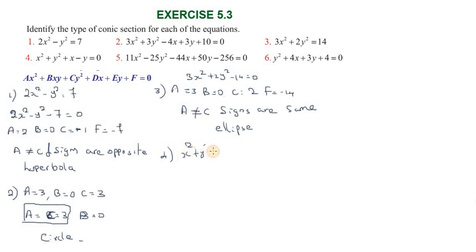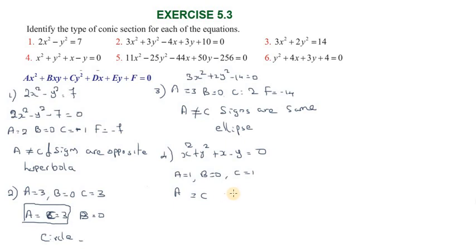The fourth equation is x squared plus y squared plus x minus y equal to 0. Here a equal to 1, b equal to 0 (no xy term), c equal to 1, d equal to 1, e equal to minus 1. Since a equal to c and there is no xy term, the fourth equation is a circle.